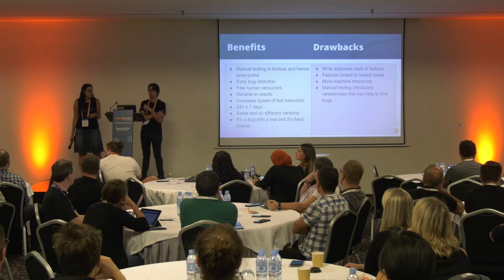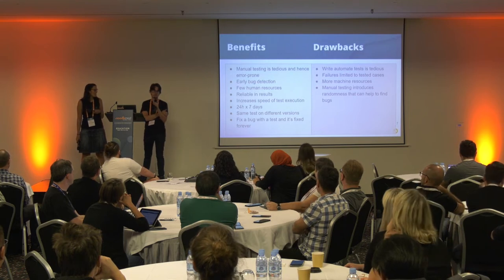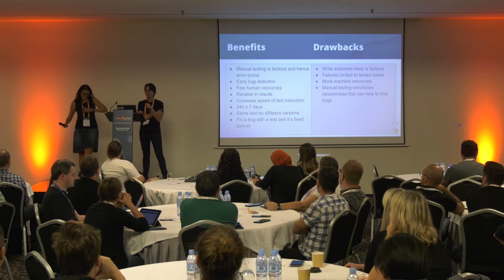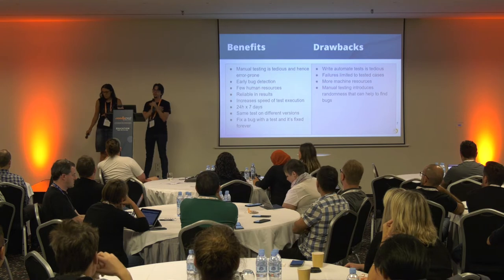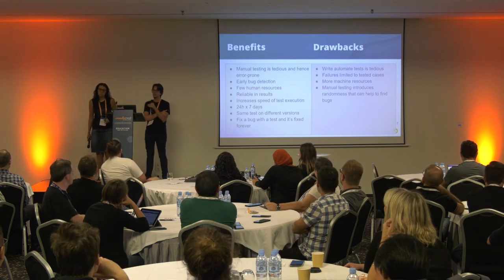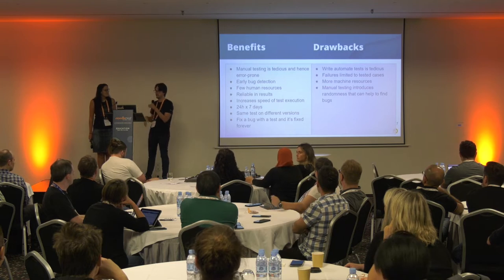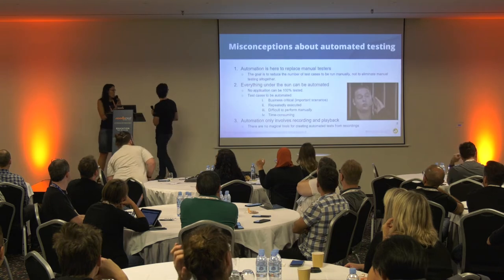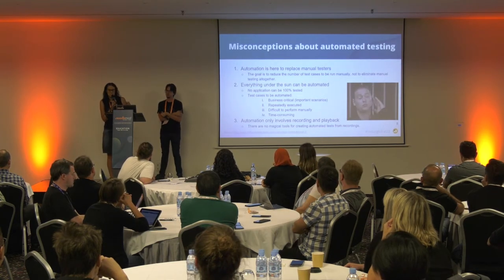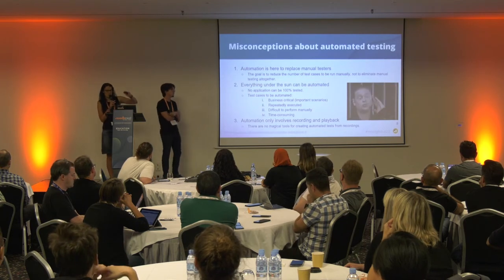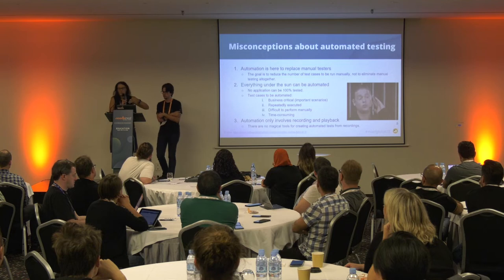On the other hand, there are also drawbacks. Manual testing introduces randomness because humans are not perfect — they make things different every time, which can actually help find bugs if testers aren't thinking about edge cases. There are a few misconceptions about automated testing. First, it's going to replace manual tests — the answer is no. The idea is to reduce the number of tests to run manually, but not to remove them completely.